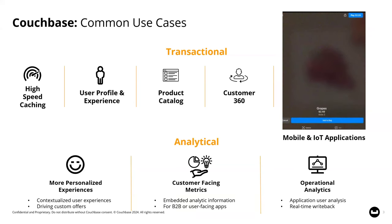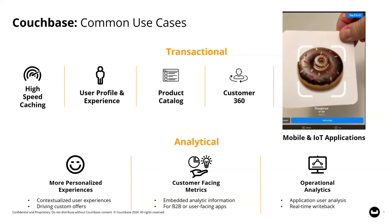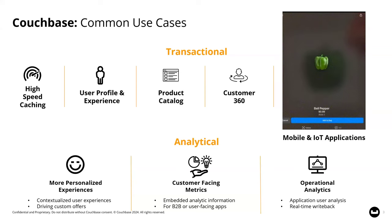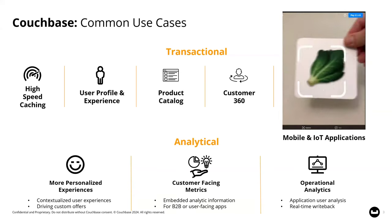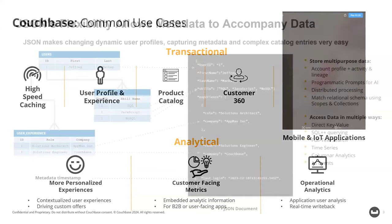The metadata we tend to generate is used to drive personalized experiences, support additional customer-facing information, deliver operational analytics, or help you understand. My little video here demonstrates a visual search capability inside of our Couchbase Lite mobile database — doing a vector or AI-powered similarity search on the device. In this case, it's identifying produce and making a shopping cart out of that, allowing you to recognize or identify objects and take an action with them.